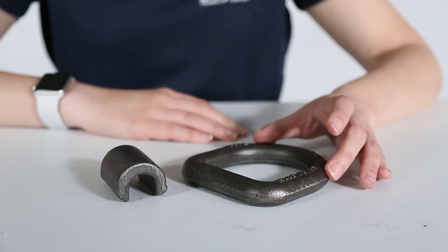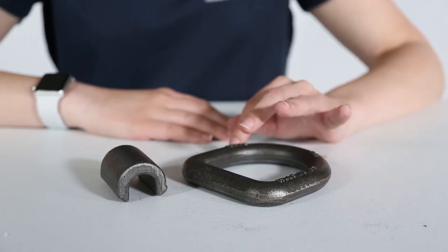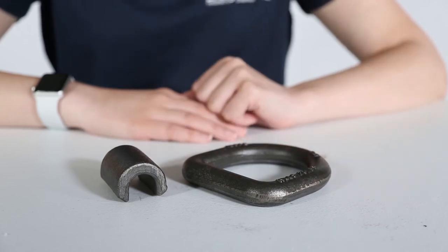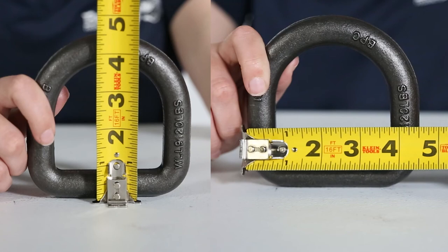The D-ring has a 3/4 inch diameter. The ring's inside dimensions are 3 inches by 3 inches and exterior dimensions are 4 1/2 inches by 4 1/2 inches.